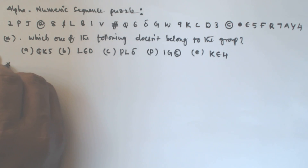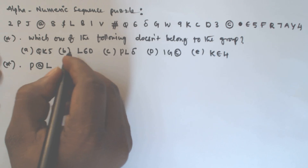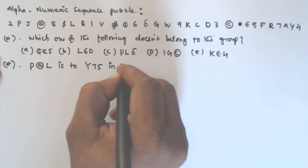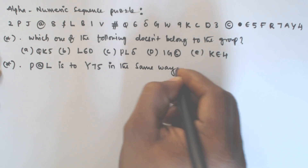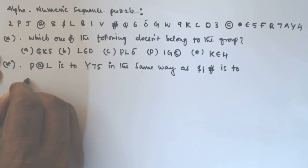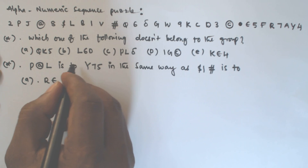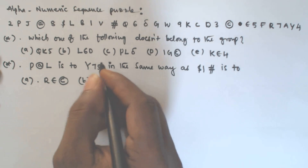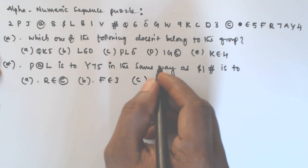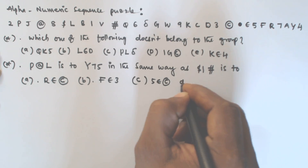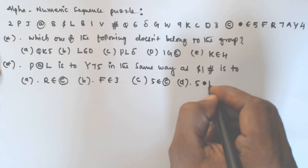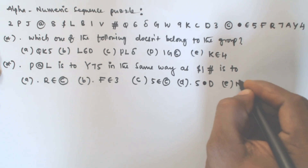Question 2: P @ L is to Y 7 5 in the same way as $ 1 # is to what? The options are: A — R € ©, B — F € 3, C — 5 € ©, D — 5 . D, and E — none of these.